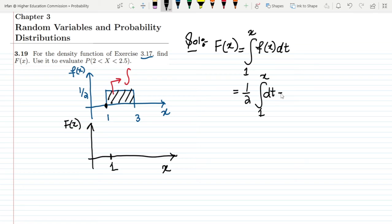Now integrating it and what I will get, it will be 1/2 and here I will get what? This will be t and values of it are from 1 to x. Now putting these values what I will get, this will be 1/2 and the values of t will be x minus 1.